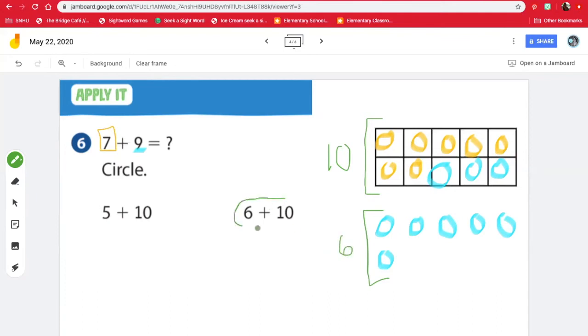Which means we need to add 6 and 10 to get our answer. And what would our answer be? What is 6 plus 10? Well, let's count the circles. We have 10 in the 10 frame. 11, 12, 13, 14, 15, 16. 6 plus 10 is 16. Let's move on.